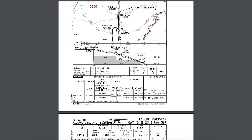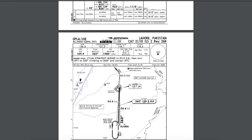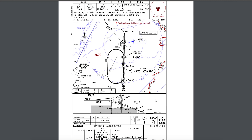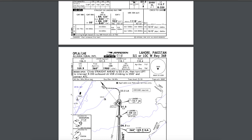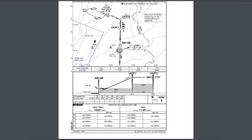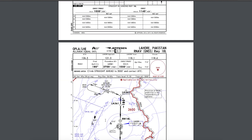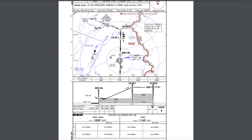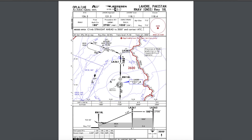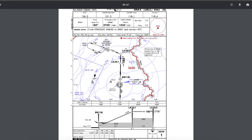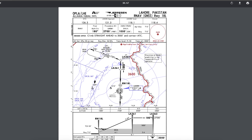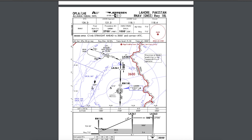In Cat 1, localizer-only approach is this. This is the circle-to-land procedure. This is a basic ILS procedure, which we call the R9 procedure. Because on some runways we don't have ILS, we use the R9 approach. We have seen that R9 covers 18 Left and 18 Right.